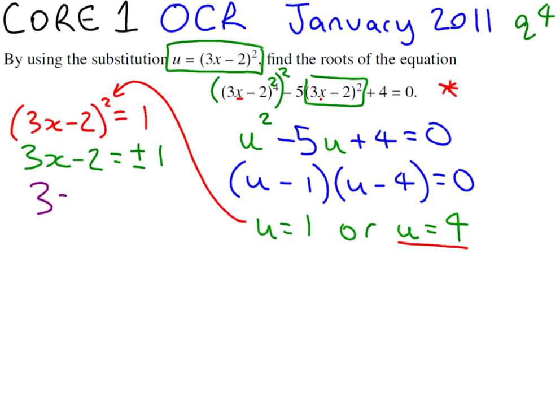So we get 3x equals 2 plus or minus 1, which is 2 plus or minus 1 over 3. So the two answers that arise from this solution are x equals 3 over 3, which is 1, or x equals 2 minus 1 over 3, which is 1 third.